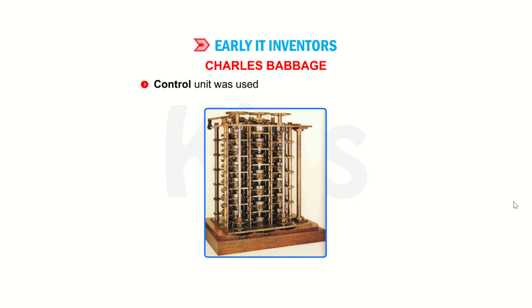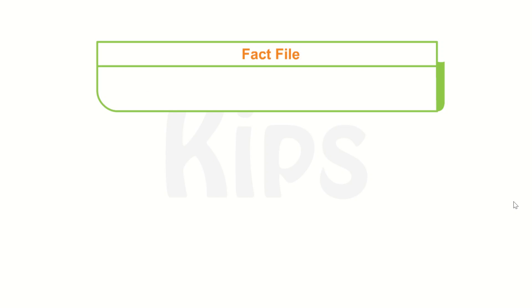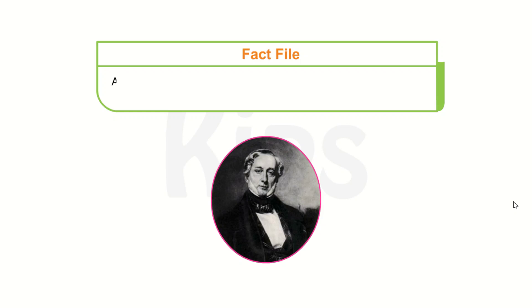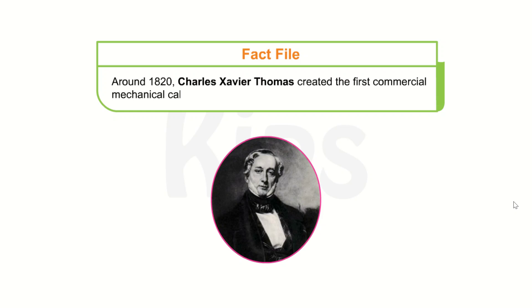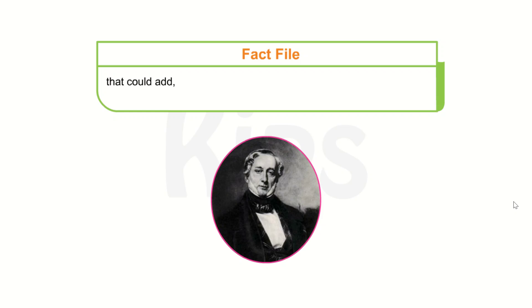Students, let's know the fact file. Around 1820, Charles Xavier Thomas created the first commercial mechanical calculator, the Thomas Arithmometer, which could add, subtract, multiply and divide. It was based on Leibniz's work.